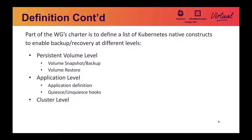Part of this working group's charter is to define a list of Kubernetes native constructs to enable protection at different levels. At the volume level, there are volume snapshot features, and we're looking into volume backup and volume restore features. At the application level, we are looking to define what constitutes your application and how to ensure application-consistent snapshots can be achieved. At the cluster level, what if you want to back up the whole cluster and restore into a completely different cluster?